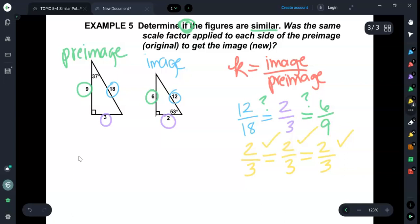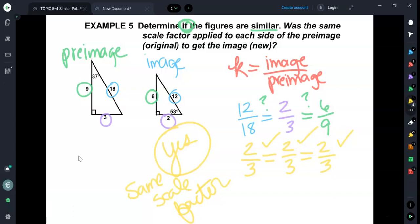They have the same scale factor. Basically, the scale factor you found was consistent throughout. So since you have one scale factor, they are similar. That is how you determine if figures are similar.